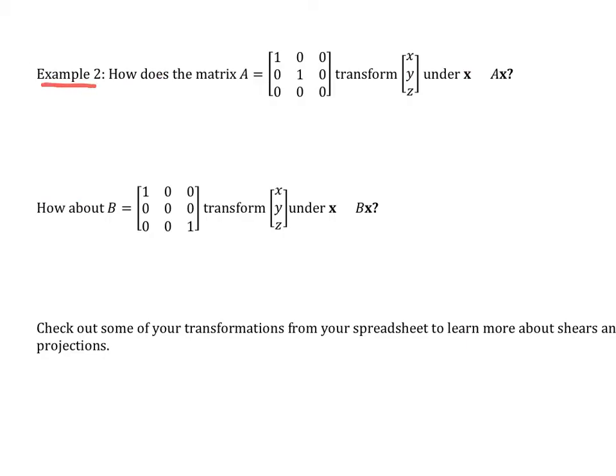All right. Example number two. This becomes the fun stuff. And I hope you did the Scooby-Doo video and tried that first before you did this. But if not, we can still work with it. How does the matrix A transform x, y, z under x maps to Ax? So instead of using x1, x2, x3 there, I use x, y, z. Just because some of you are more used to it.